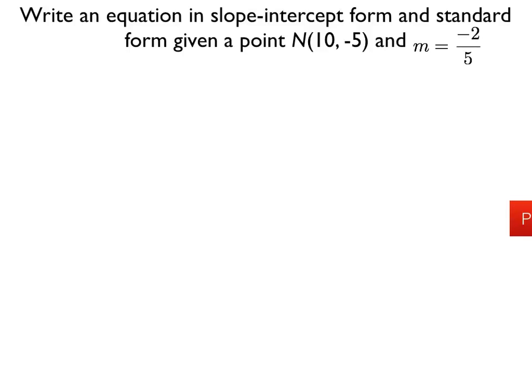Take a minute to read this example. We want two forms of a line for this one. First we want the slope-intercept form, and also we want the standard form.